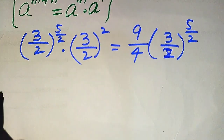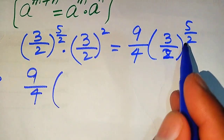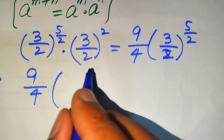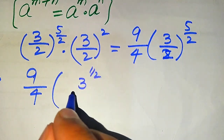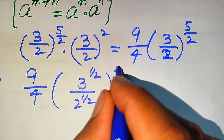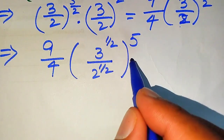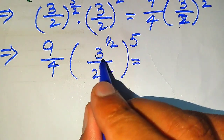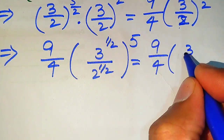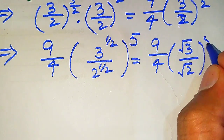Now we rewrite the exponent 5 over 2. We have 9 over 4 and we move the 1 over 2 inside the term, so it will be written as (3 to the power of 1 over 2) divided by (2 to the power of 1 over 2), and its whole power is 5. We know that 3 to the power of 1 over 2 is the square root of 3, so this becomes 9 divided by 4 into (square root of 3 divided by square root of 2) to the power of 5.